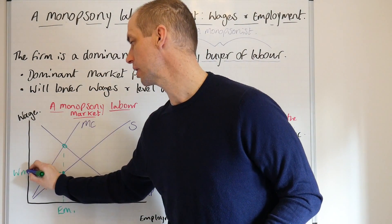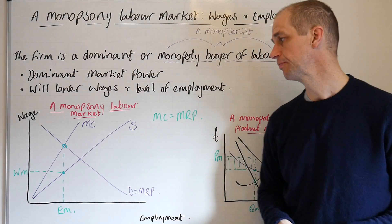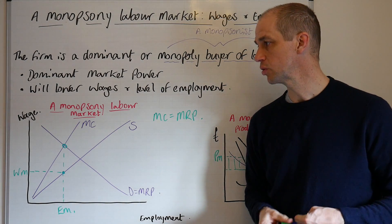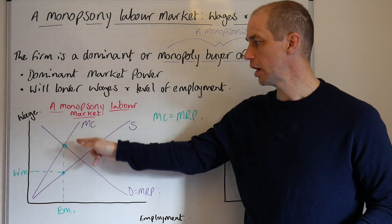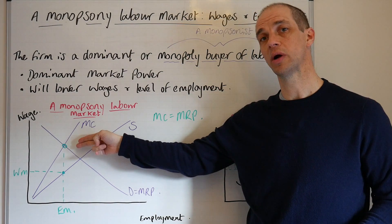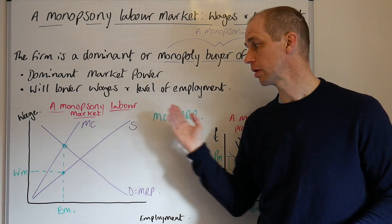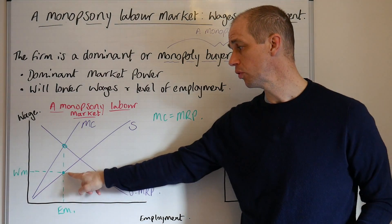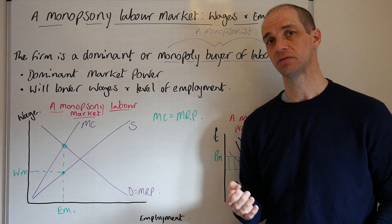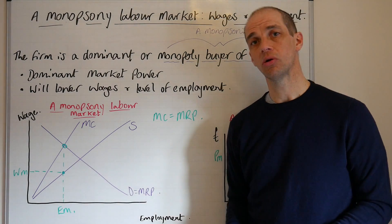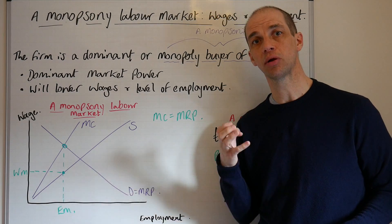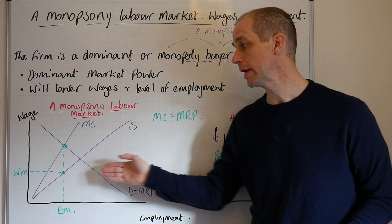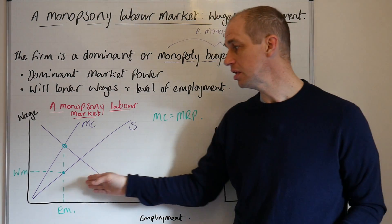We can take that wage rate across and highlight WM. Now, it's very easy to make a mistake here under time conditions and identify the marginal cost intersection as the wage rate — that is incorrect. You've got to think: what is the wage of those employees at a given point? It is determined by the supply curve. The marginal cost simply implies the additional cost of employing that next labourer and the fact that you've got to pay everyone a higher wage. So there is a key difference there — please avoid making that mistake.